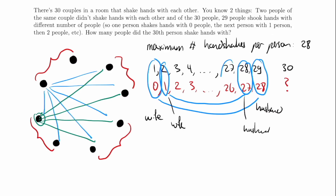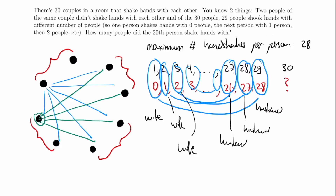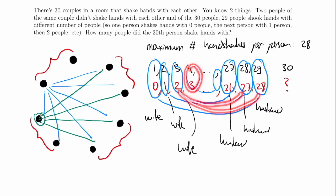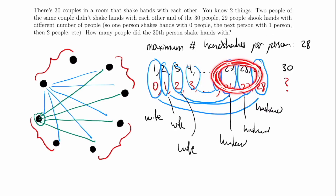We can keep going with the same logic to get that the third wife and third-to-last husband must be married as well. We just keep going like this, where we have a husband and a wife paired at each step. Looking at all the wives: the first wife shakes hands with nobody, the second wife only shakes hands with the last husband, the third wife only shakes hands with the second-to-last and last husband. All these wives only shake hands with the husbands — none of them shake hands with the 30th person.